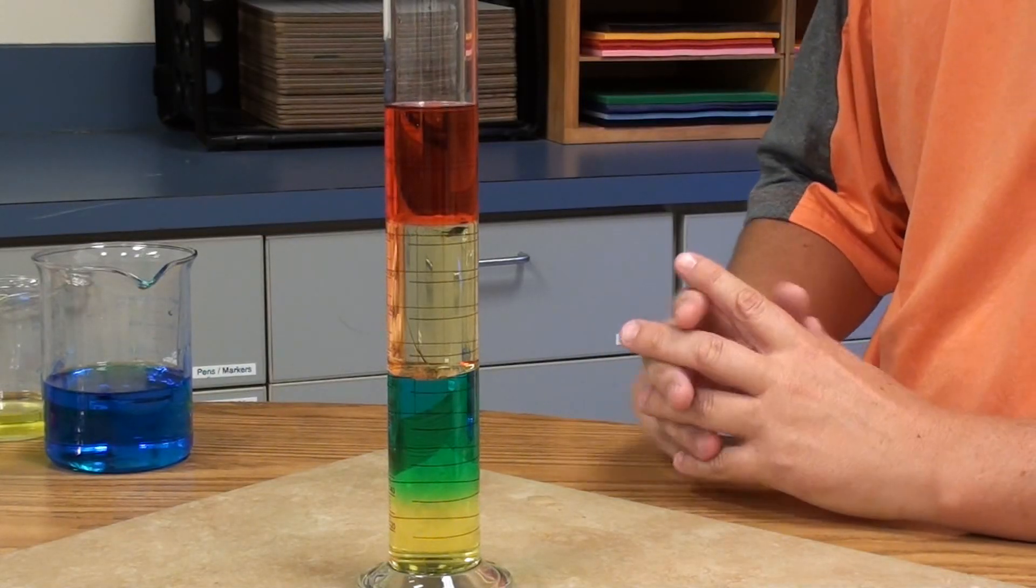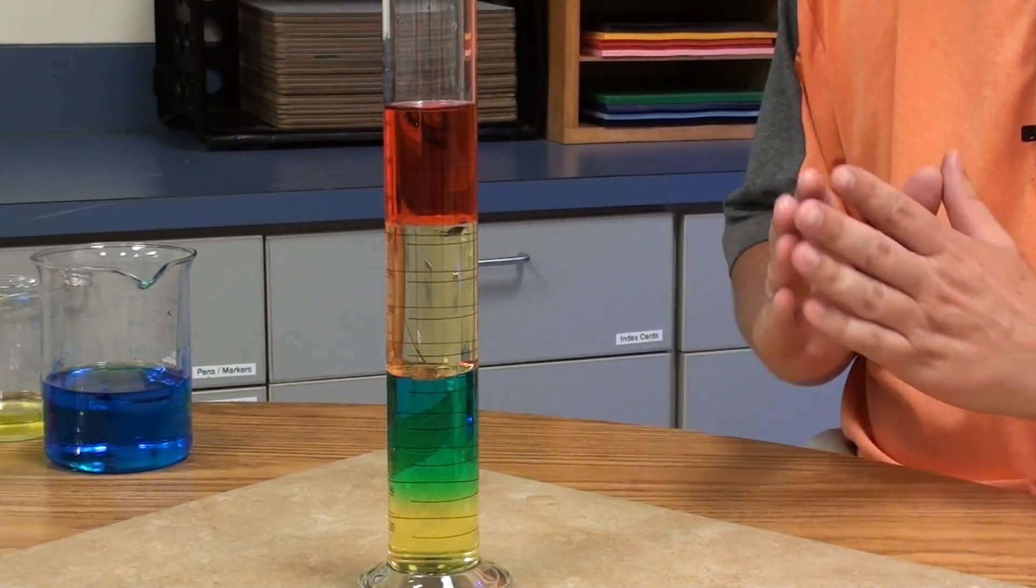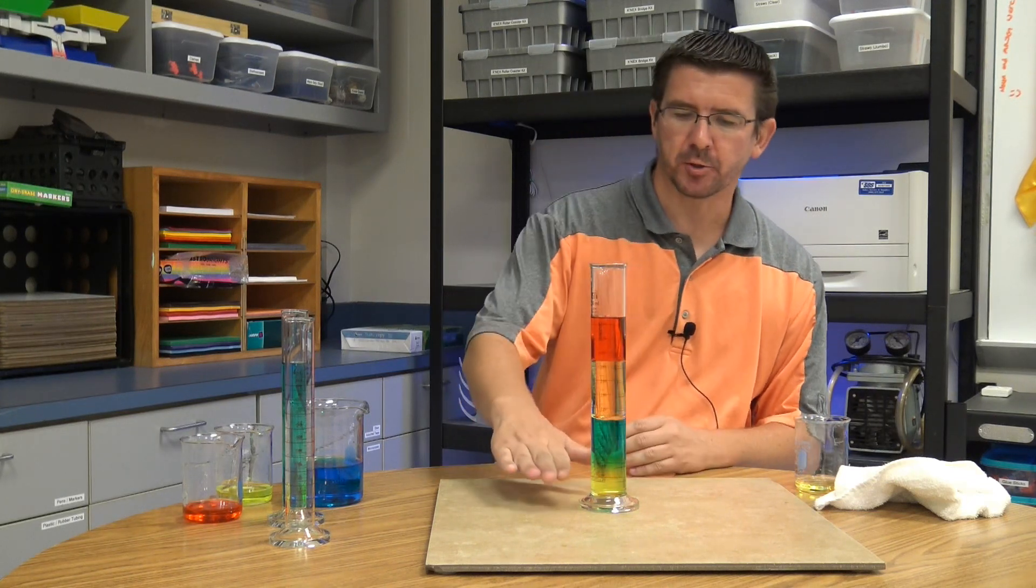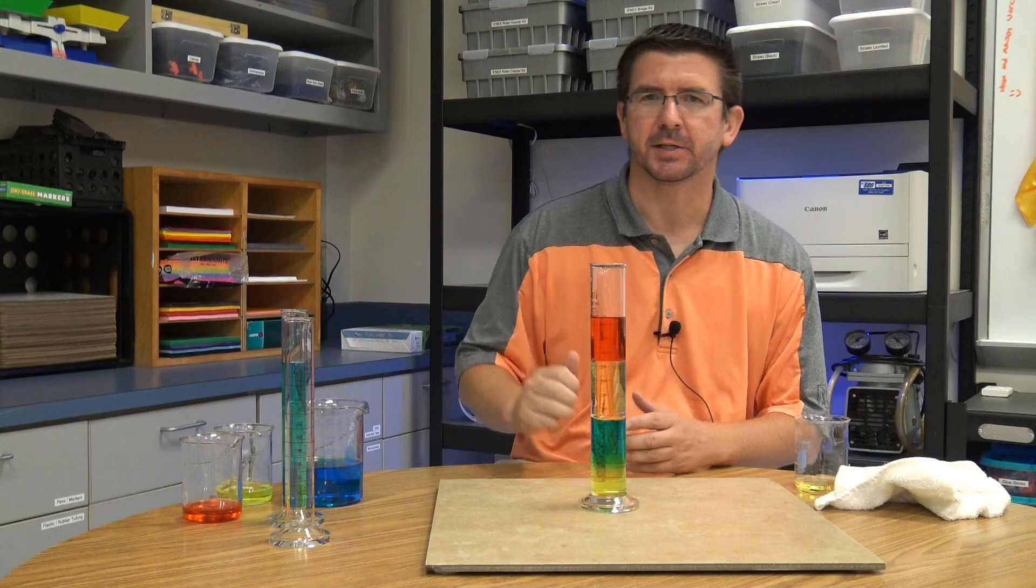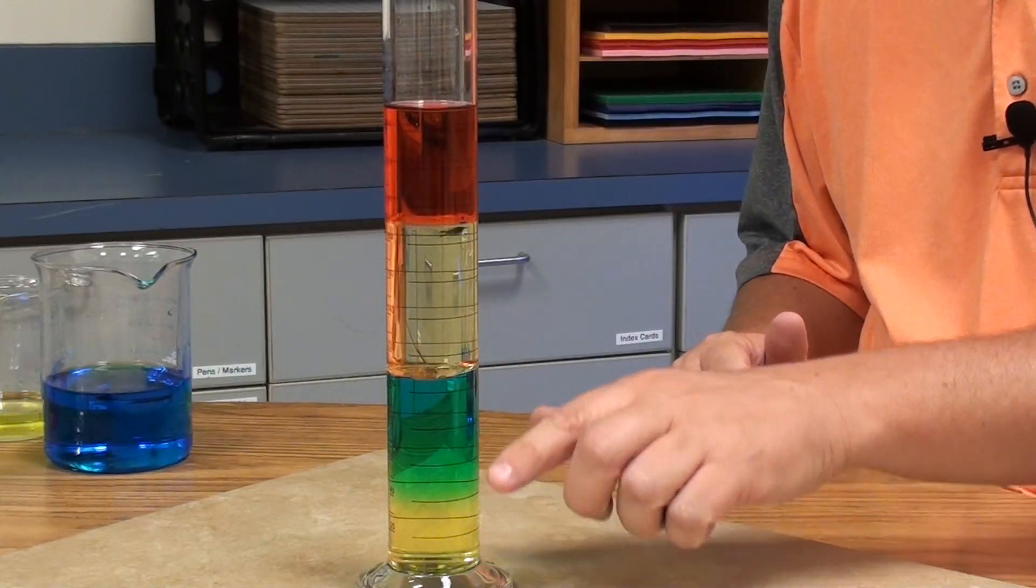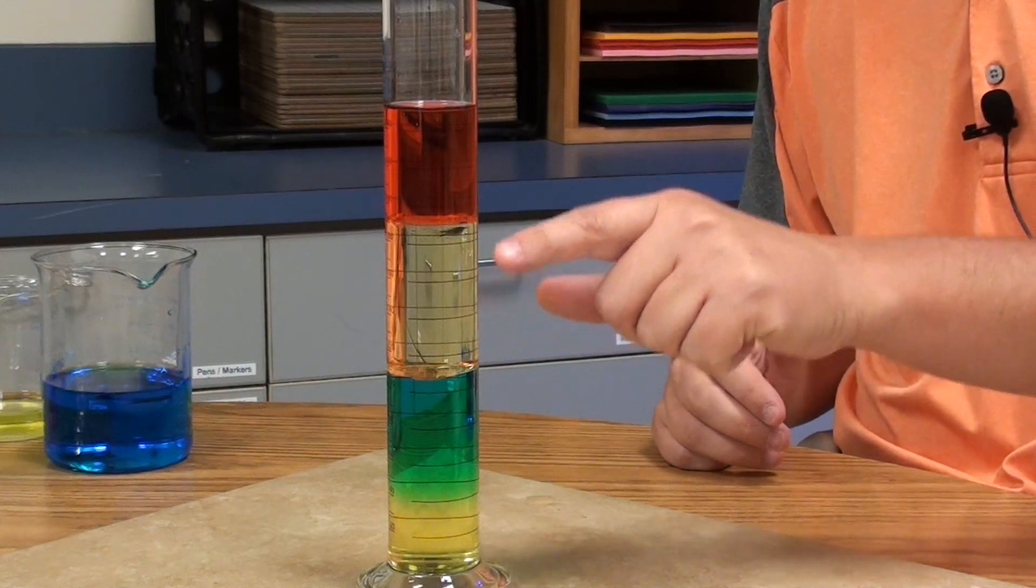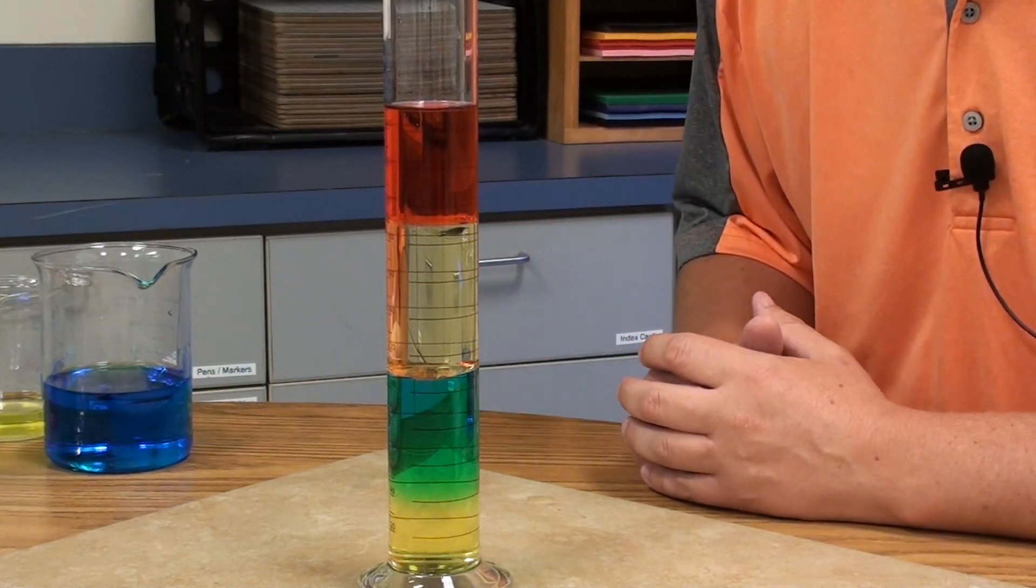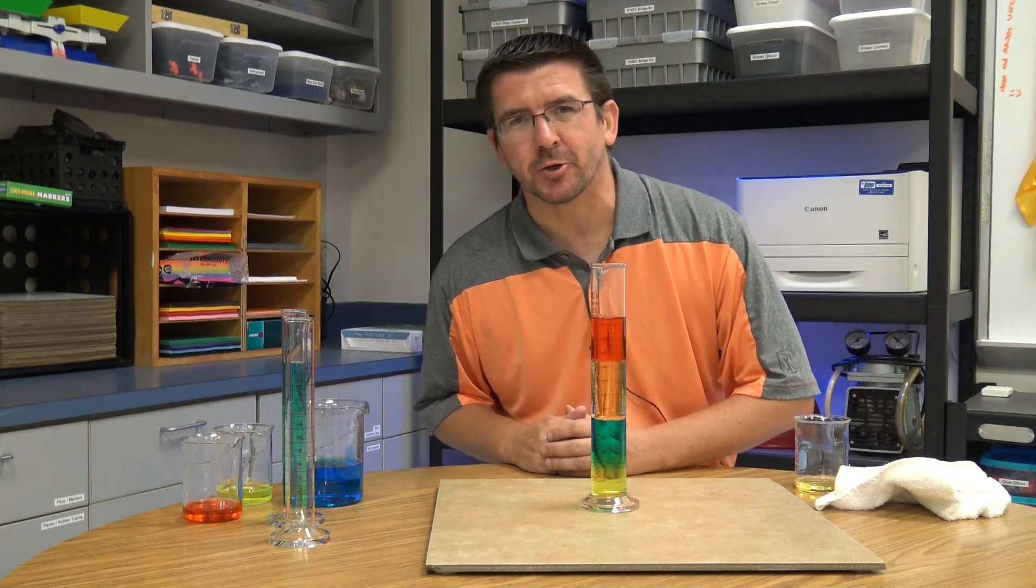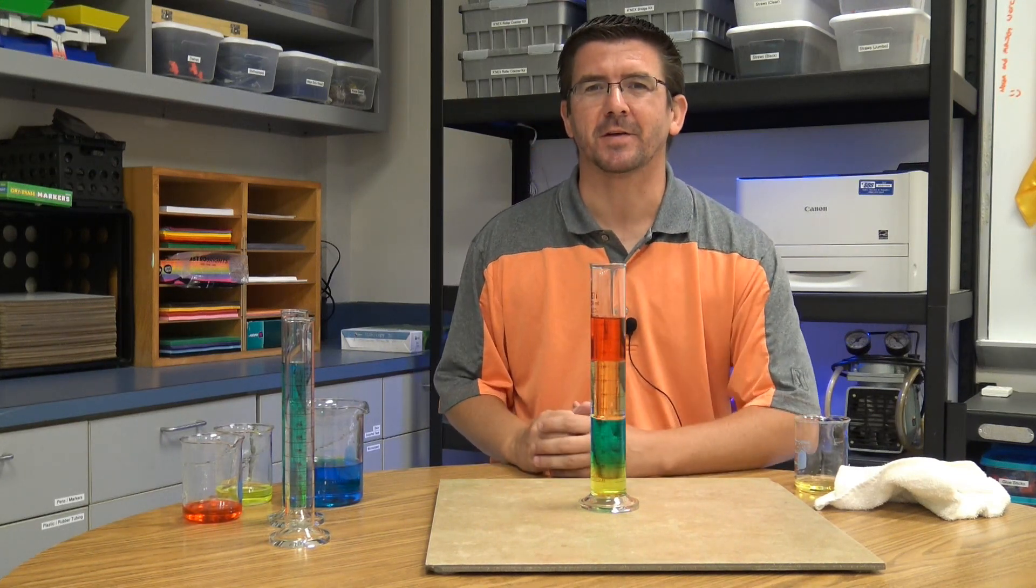So here we can see our finished density column. And again, this is just a very simple way to organize liquids in terms of most dense on the bottom to least dense on the top. And again, with this density column, we're going from salt water to fresh water to vegetable oil to rubbing alcohol. A very neat experiment, a very simple experiment that you can do at home to demonstrate the density of different liquids.